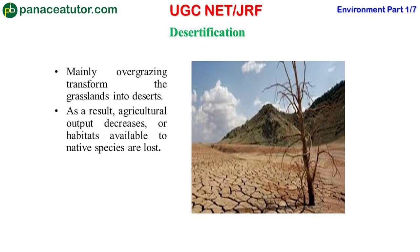Next is desertification. As the name indicates, it is the formation of deserts. Mainly, overgrazing transforms grassland into deserts. As a result, agricultural output decreases and habitats available to native species are lost.